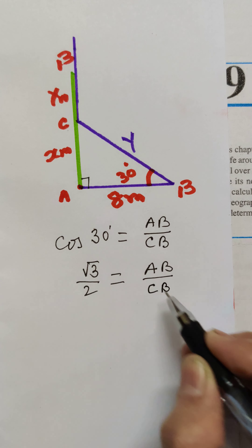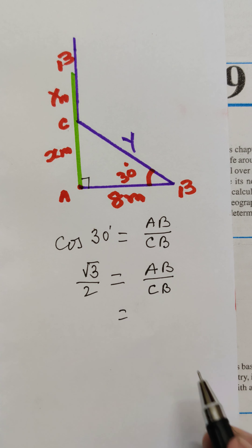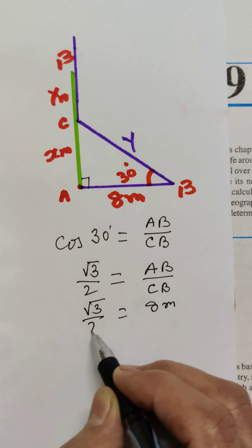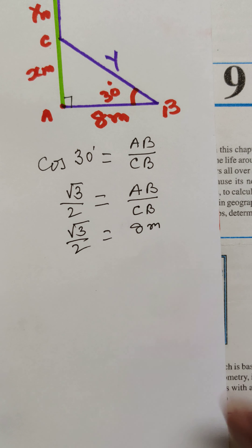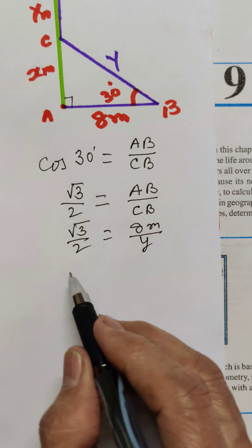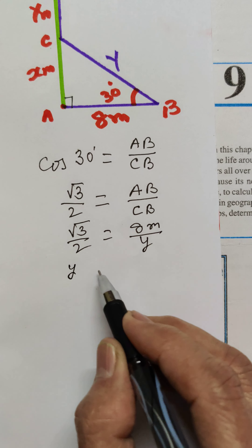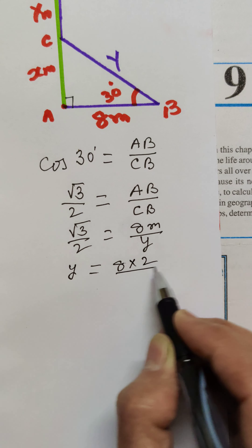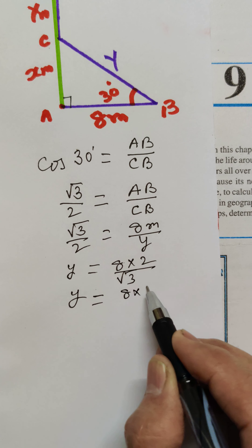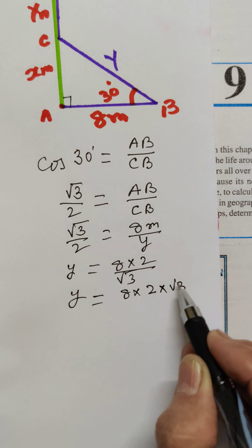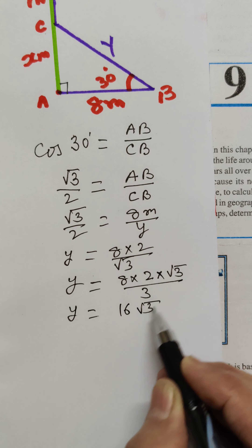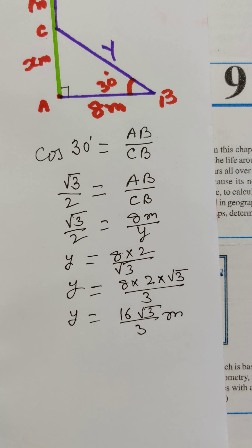Since AB is 8 meters, we get √3/2 = 8/CB, so CB = y = (8 × 2)/√3. Rationalizing, y = (8 × 2 × √3)/3 = 16√3/3 meters.